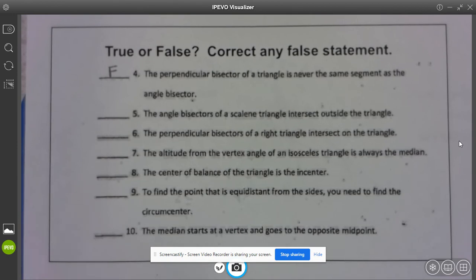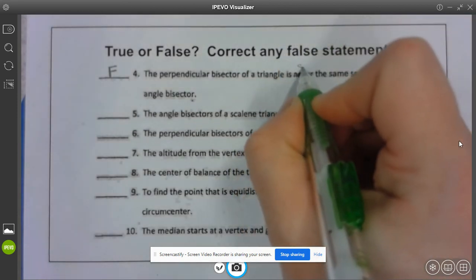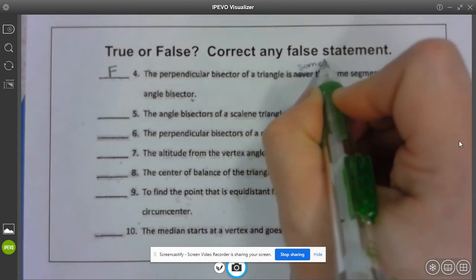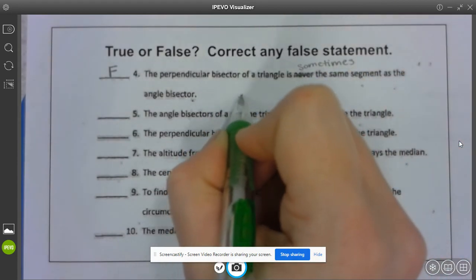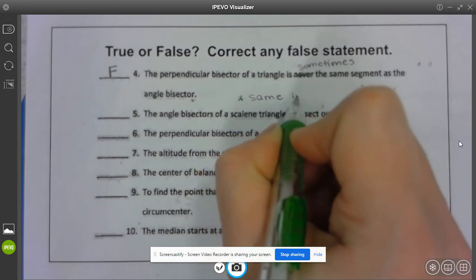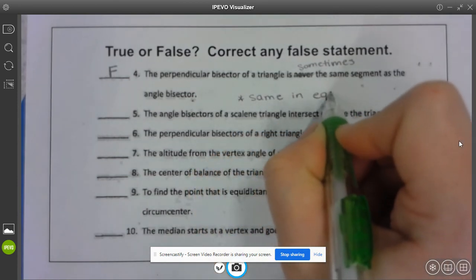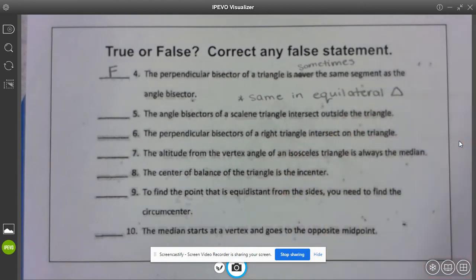If we have an equilateral triangle this will be true because it will not only bisect the sides it will also bisect the angles. So I would say this is sometimes and my special case is that they are the same in an equilateral triangle.